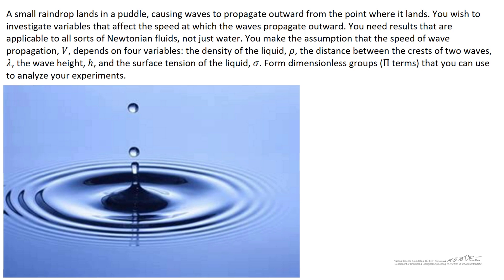Let's consider a problem in which a small raindrop lands in a puddle. We're trying to figure out the velocity of the waves that move outward from the location where the raindrop impacts the puddle. We'll call that speed v.